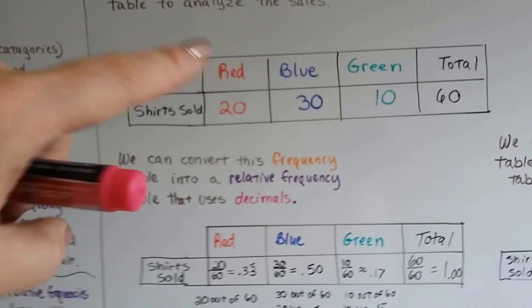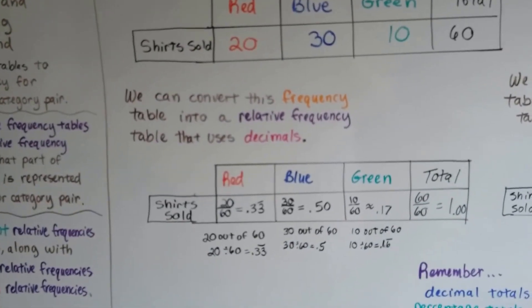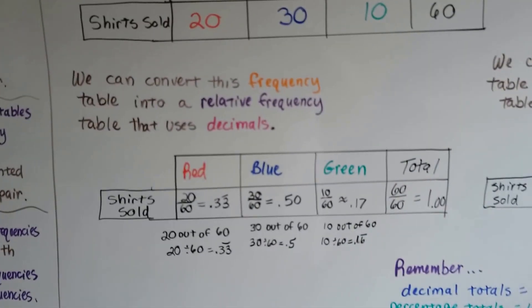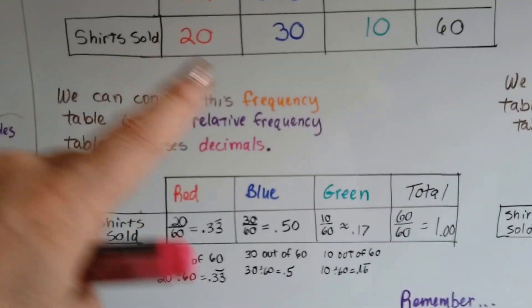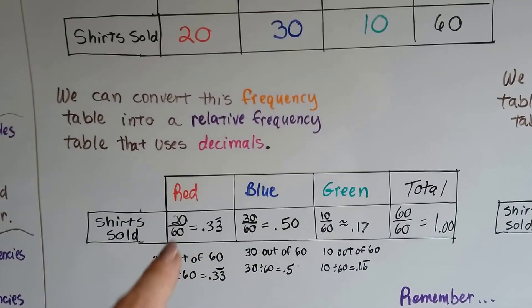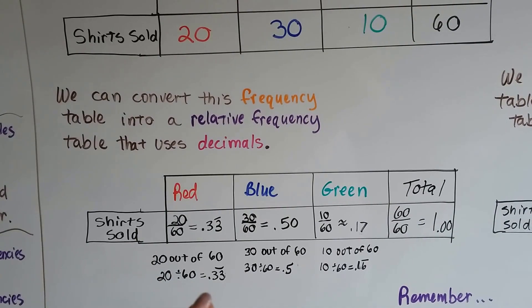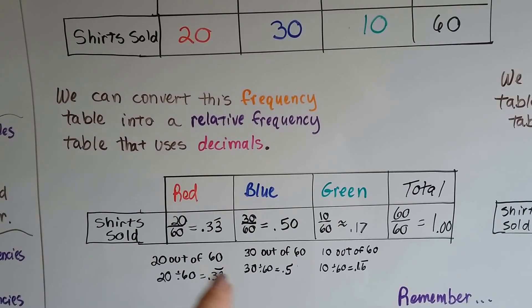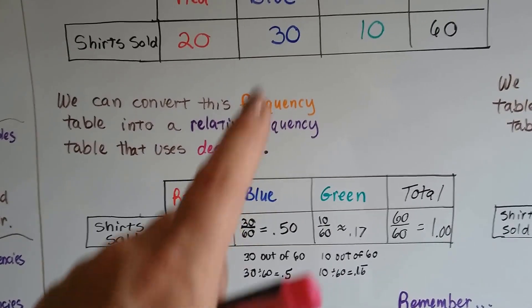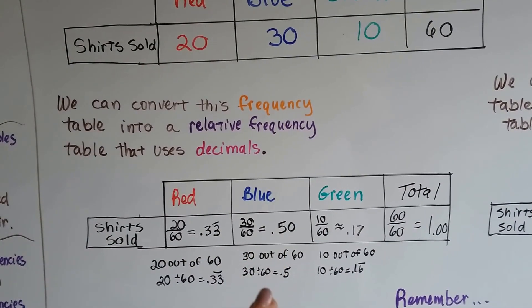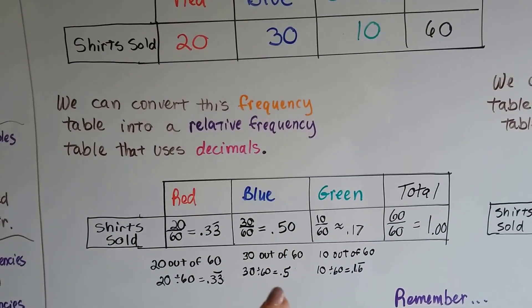So we can convert this table into a relative frequency table that uses decimals. So 20 out of 60 is 20 divided by 60. That's .333. So we put the bar over the top to show it's a repeating decimal. 30 out of 60 is half. That's .50. That's 30 divided by 60.